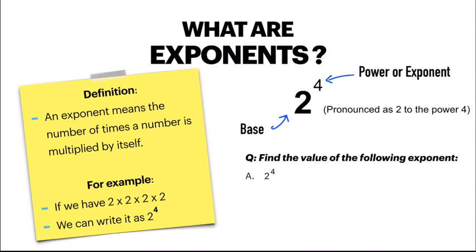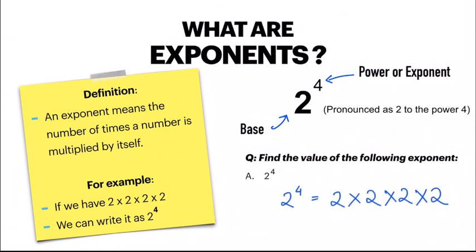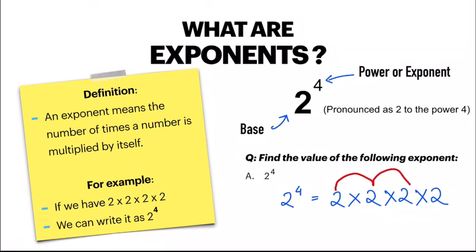If you are asked to find the value of a given exponent, what you have to do is write it in expanded form. So 2 to the power 4 is equal to 2 multiplied by 2, 4 times: 2 into 2 into 2 into 2. If you multiply 2 into 2 you get 4, then 4 into 2 is 8, and 8 into 2 is 16. So the final answer of 2 to the power 4 is equal to 16.